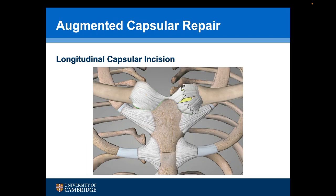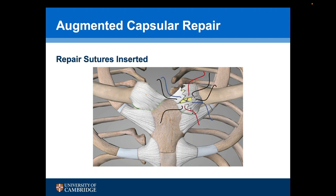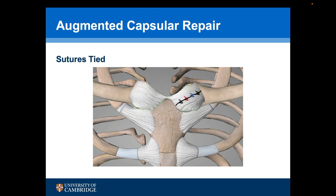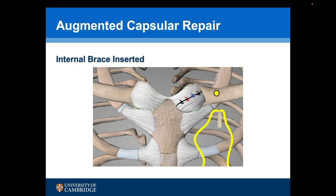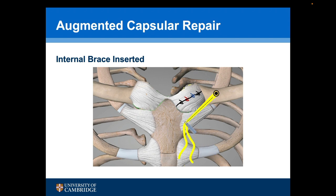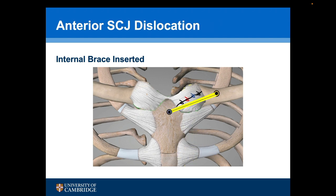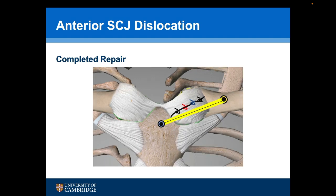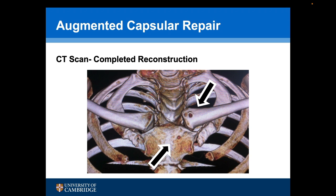The two sides of the torn ligament are then split longitudinally. Plication sutures are placed between the leaves of the capsule and then tied, repairing the capsule and also tensioning it. A drill hole is then made in the clavicle to accept the anchor from the augmentation device. The anchor is then inserted and the two tapes passed through a second anchor. A drill hole is then made in the sternum, the second anchor inserted, and the tapes between the two anchors tensioned, providing a strong construct to protect the repair. This is the completed repair. A post-operative CT scan shows that the joint has been reduced and we can see the two anchor holes for the internal brace device.